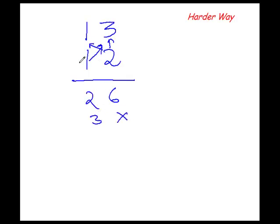So let's see the usual way of multiplying 13 with 12. So 2 times 3 is 6, 2 times 1 is 2, 1 times 3 is 3, 1 times 1 is 1. Now add the numbers in the column, so 6, 3 plus 2 is 5, and this is 1.